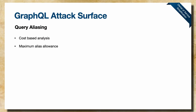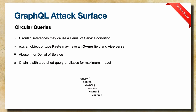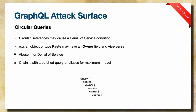Another denial of service avenue is circular queries. If your schema has two types referencing each other — for example in Pastebin, a paste has an owner and an owner has pastes — someone can create a deeply nested query referencing these objects back and forth, causing significant resource consumption. If you chain that with batching queries or aliases, you can really amplify the attack by abusing these features together.